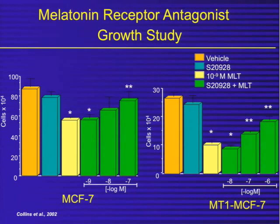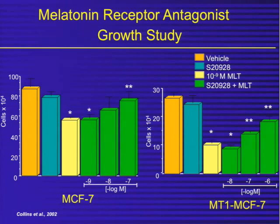In this other panel, when we take our breast cancer cells and overexpress the melatonin receptor in them, then treat the cells with melatonin, we get a much more pronounced growth inhibitory effect. So we know that the melatonin receptor, particularly the MT1 melatonin receptor, mediates a large portion of the growth inhibitory effect we see in breast cancer cells, and this can be reversed by using a receptor antagonist.